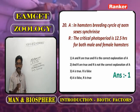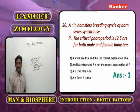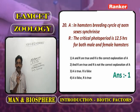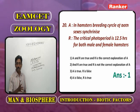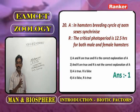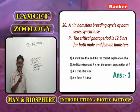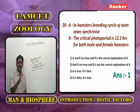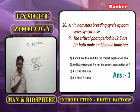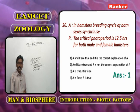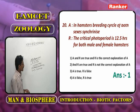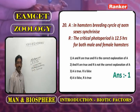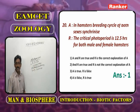The assertion states that in hamsters the breeding cycle of both sexes synchronizes. The reason is that at the critical photoperiod, gametes from both sexes are released and undergo fertilization. Both assertion and reason are correct and the reason explains the assertion.